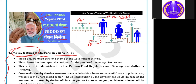Under this scheme, the subscriber receives a guaranteed pension. If the subscriber dies, their spouse will receive the pension amount. If the spouse also passes away, the accumulated pension corpus is returned to the nominee — who can be a son, daughter, or anyone designated — as the total accumulated amount.